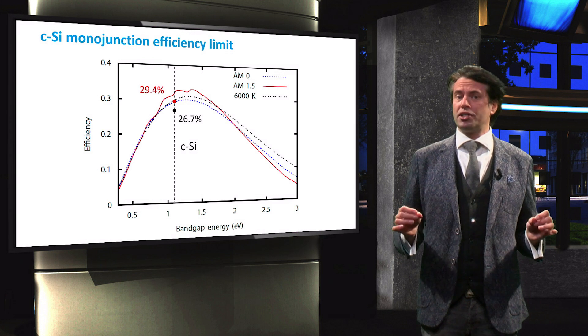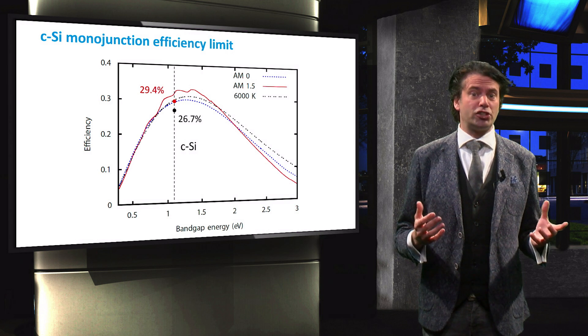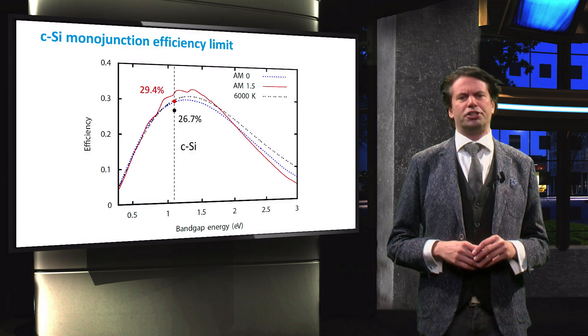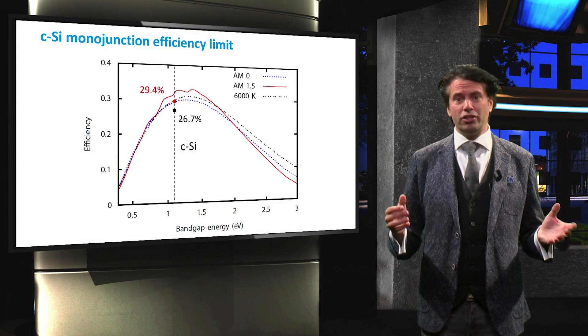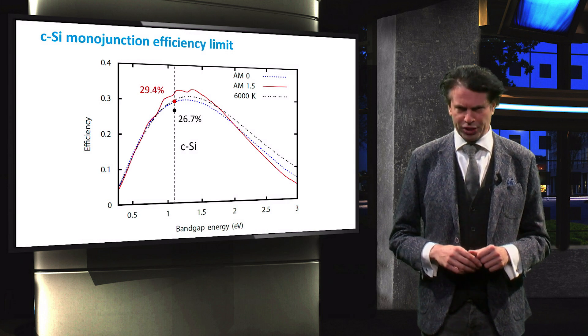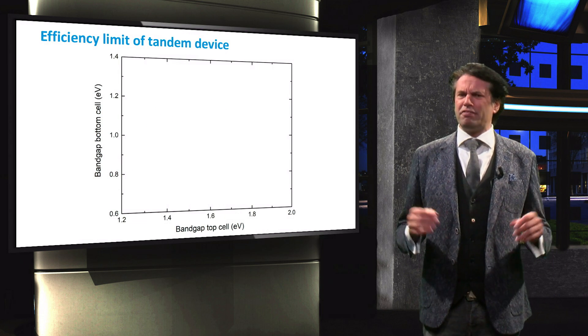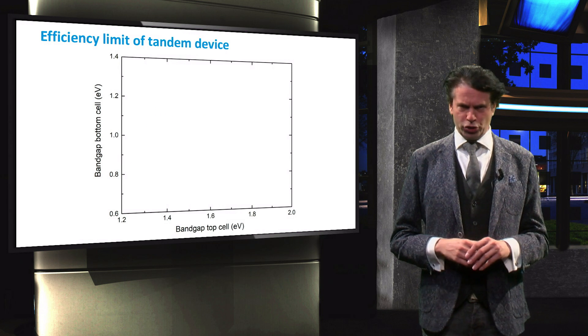It is therefore no wonder that the PV industry is looking for ways to further improve the efficiency of this very mature technology. The logical next step is therefore using crystalline silicon in a multi-junction configuration. But to what extent can we increase the efficiency by creating a multi-junction device?